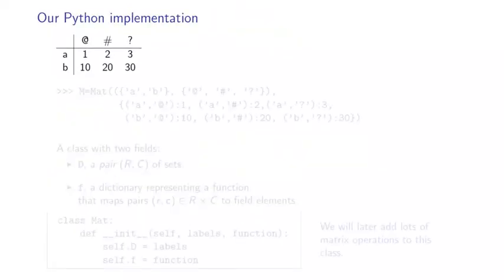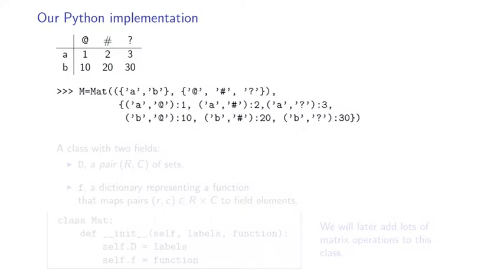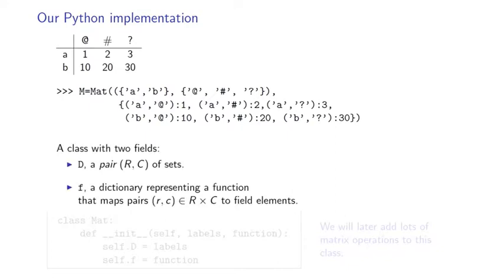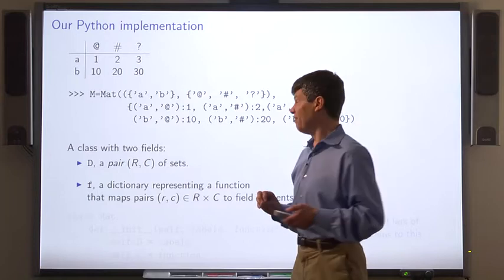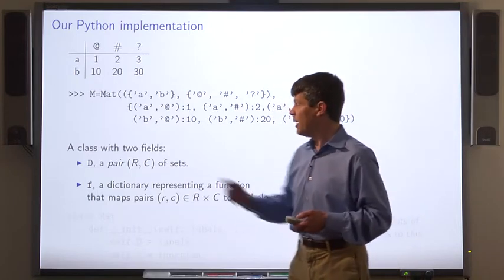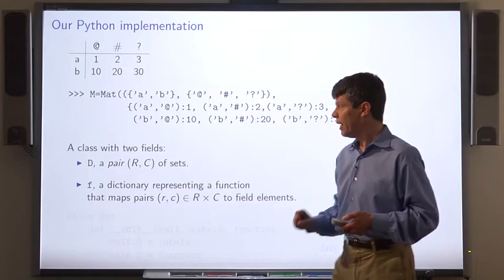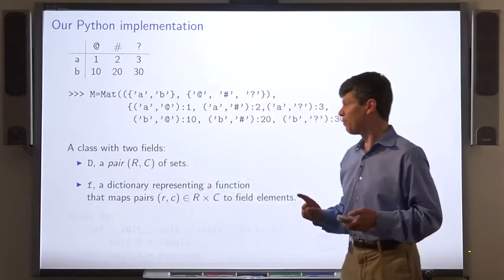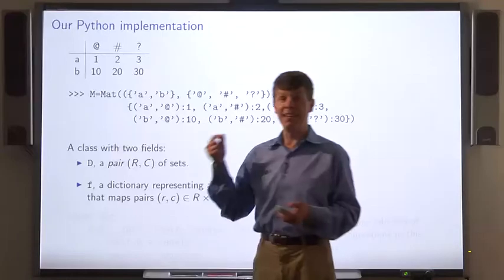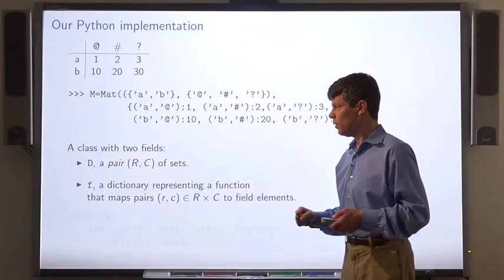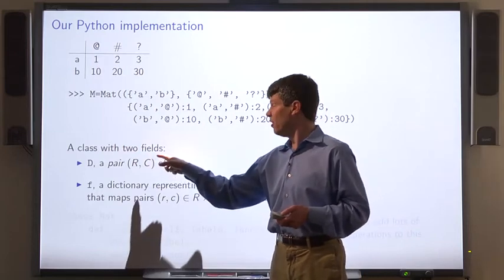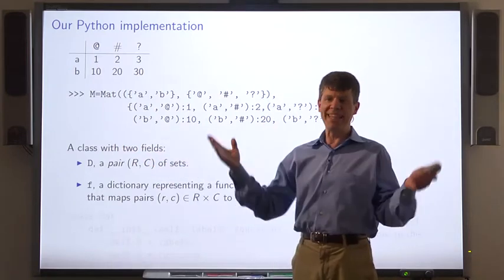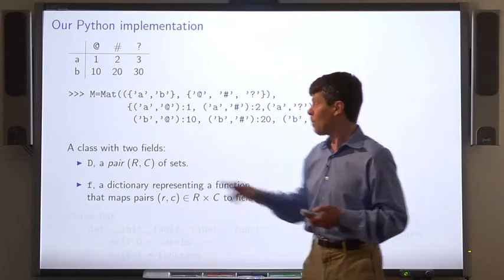Our primary representation for matrices will be using a Python class MAT. This is a class with two fields. This is analogous to, but not exactly like Vec. The two fields are D and F. F, just as in Vec, is a dictionary. D is, instead of being a set, a pair of sets. You would think that D would be the set that's the Cartesian product of the row labels with the column labels, but that gets too big. So we represent it as a pair, RC,